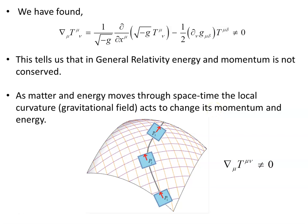The gravitational field — the curvature of spacetime — acts to change the velocities, the energies, the momenta of objects. So momentum is not conserved in that sense. There's no global law of conservation of energy and momentum. It's not possible. Whereas in flat space, it is possible.